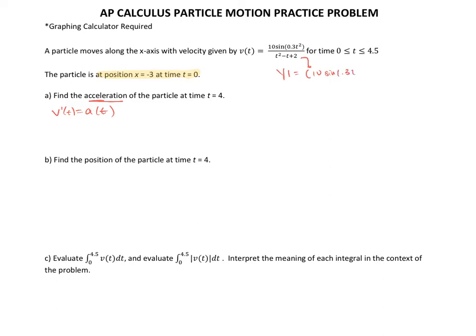Open parentheses, 10, sine, open parentheses, 0.3, t squared, and then divided by open parentheses, t squared minus t plus 2. This will be your y1, and you're going to refer to this every time.